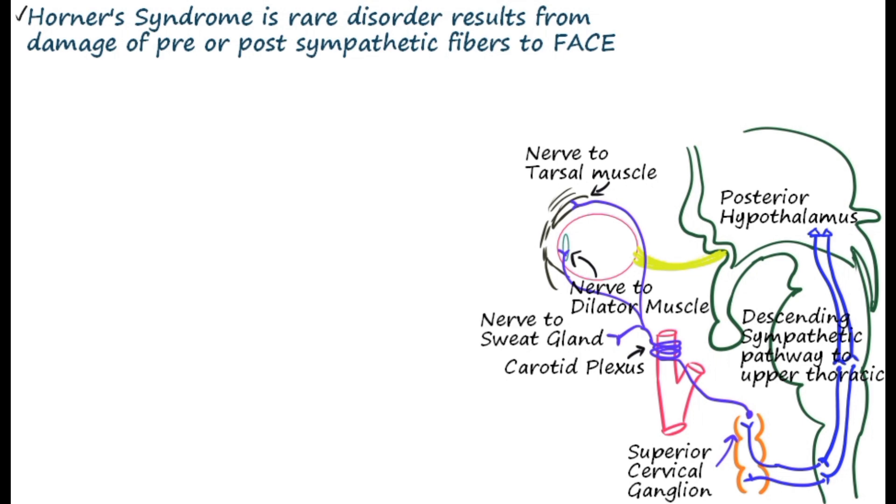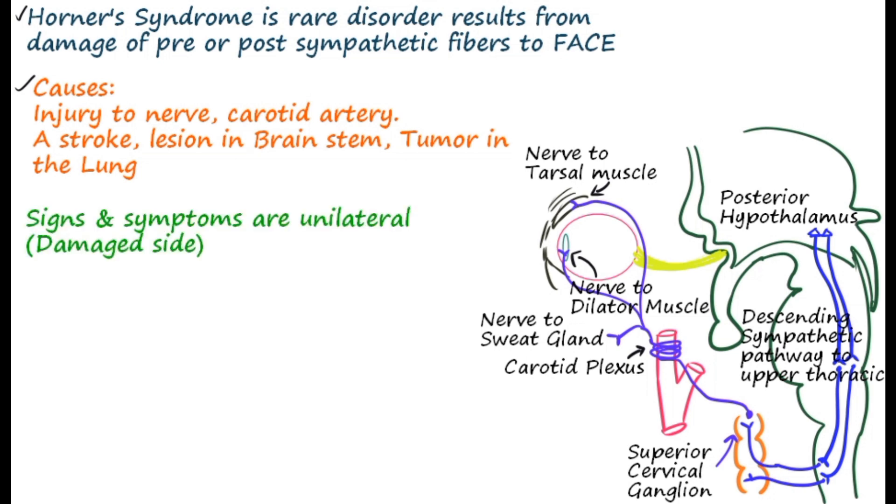The main causes of Horner syndrome: injury to the carotid artery or stroke, lesion in the brainstem, and tumor in the lung, particularly the upper portion which disrupts the superior cervical ganglion.